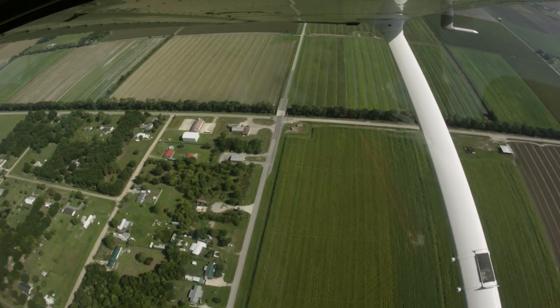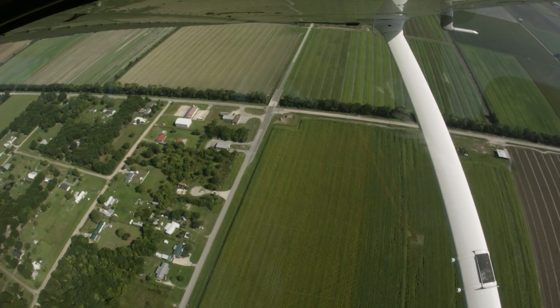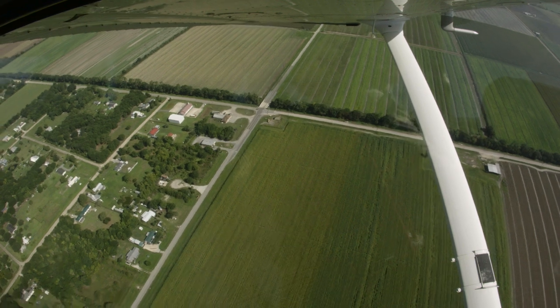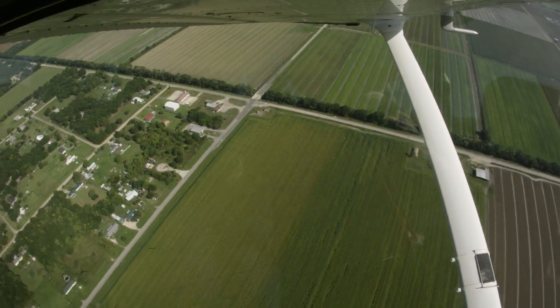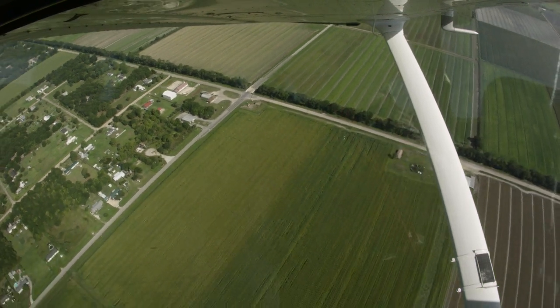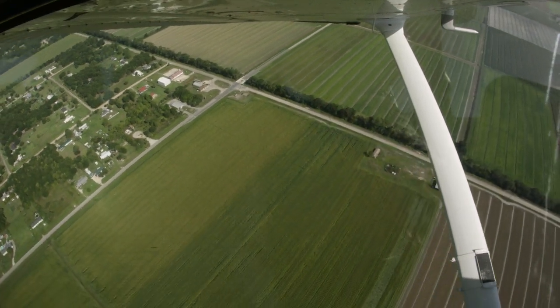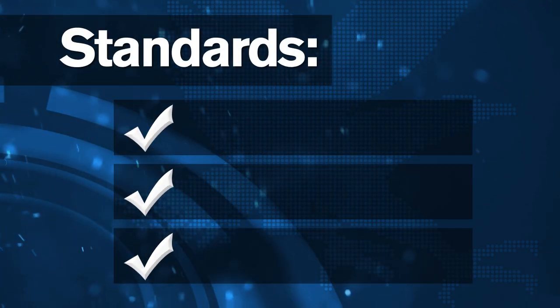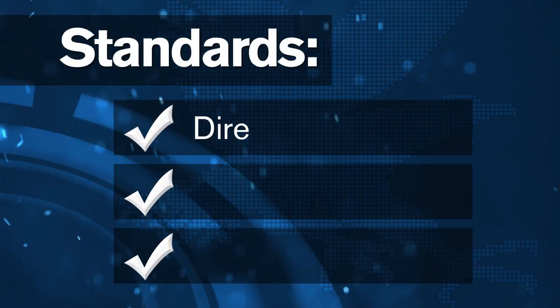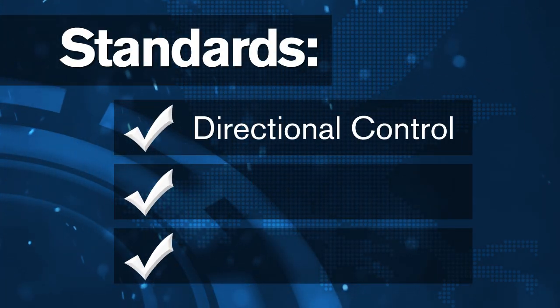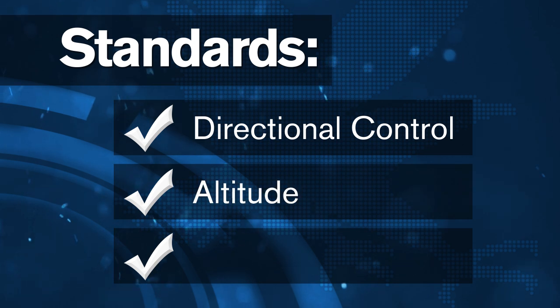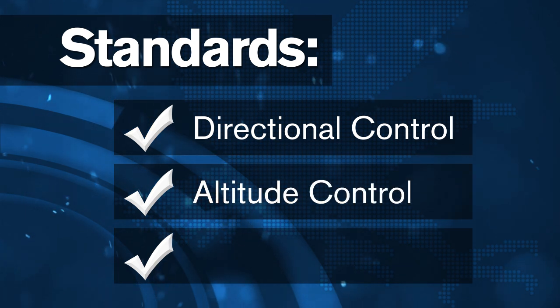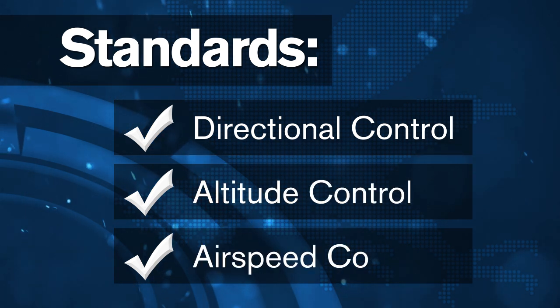In preparation for our first attempt at performing S-turns, we're going to take a few minutes to discuss the key elements of the maneuver. As with all other maneuvers, an S-turn has three main areas that the pilot needs to concentrate on: directional control, altitude control, and airspeed control.